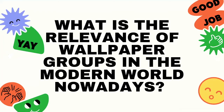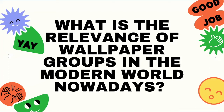We now move on to the highlight of our presentation: what is the relevance of wallpaper groups in the modern world? There are four main reasons. First is the usage of design and embellishment. Second is the relevance to mathematics. Third is the creation process — how the wallpaper group is made. And fourth is the recognition of logic with mathematical ability among these designs.